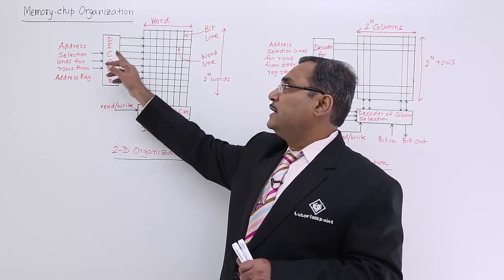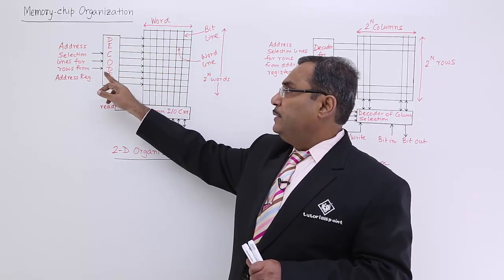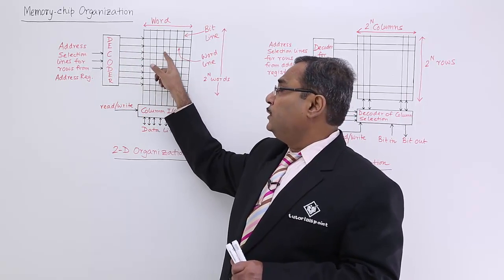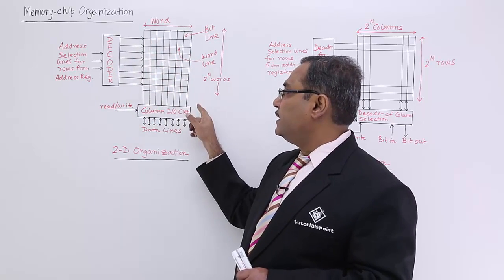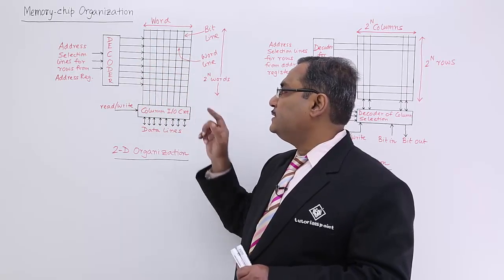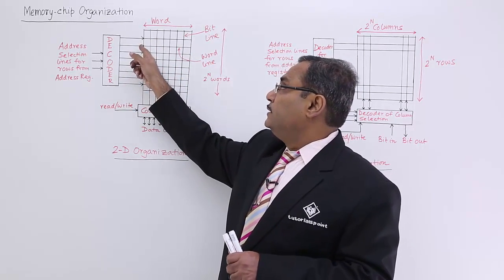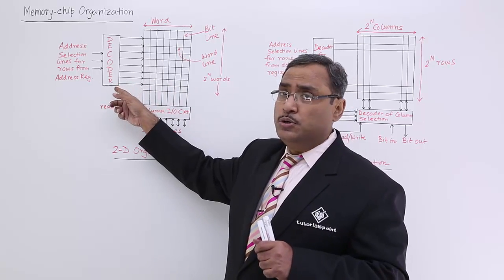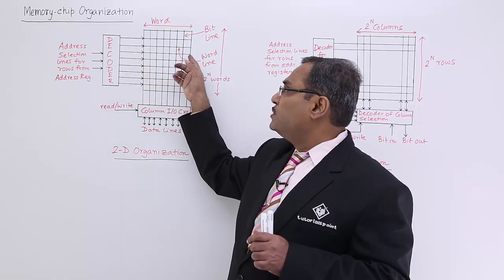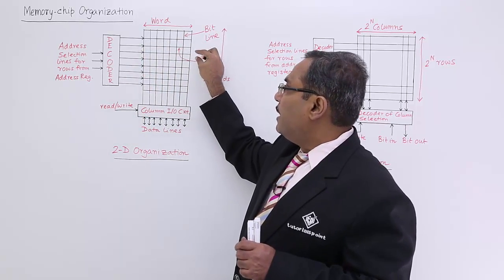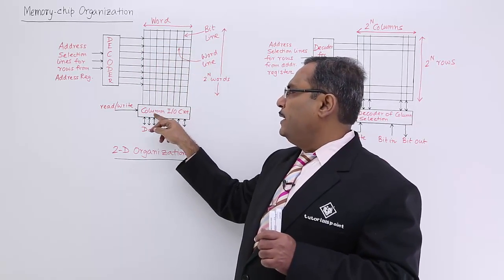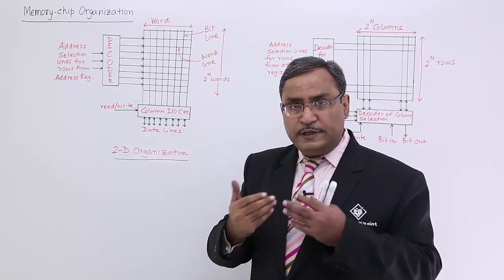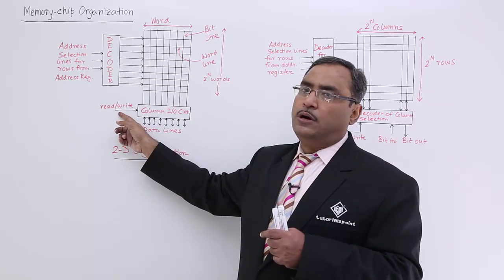Here we have 3 input lines and 8 output lines. Depending upon the input bit combination, one of the output lines will be enabled. With that particular output line, we have vertical lines — it might be 8, 16, or 24; that is not dependent on the decoder size. The word — meaning the number of bits on that line — will be coming out through this IO circuit. Whether bits come out or go in will be decided by the control line for read or write.